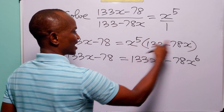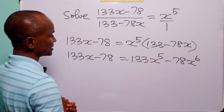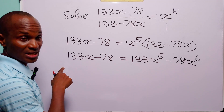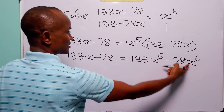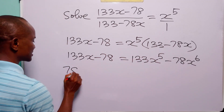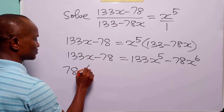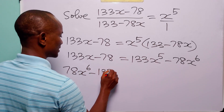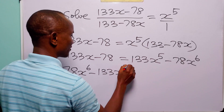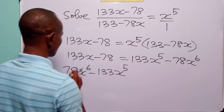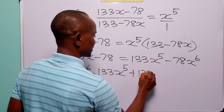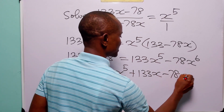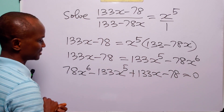Note that 1 plus 5 is equal to 6. Now let us bring these two terms on the right-hand side over to the left-hand side. When we do that, we have 78x raised to the power 6 minus 133x raised to the power 5 plus 133x minus 78 is equal to 0.